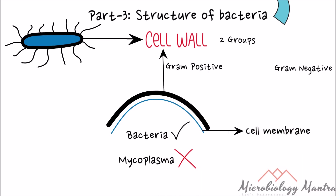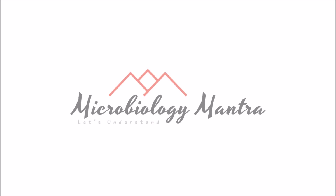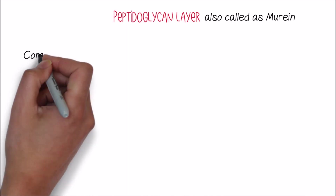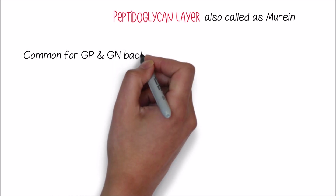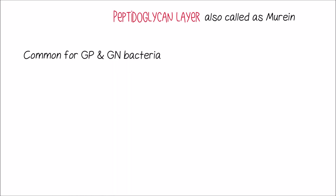The composition of gram-positive bacterial cell wall is completely different from gram-negative bacteria. Let's understand the differences and the arrangement of biomolecules. Peptidoglycan layer, also called murein, is a common component of the cell wall of both gram-positive and gram-negative bacteria.